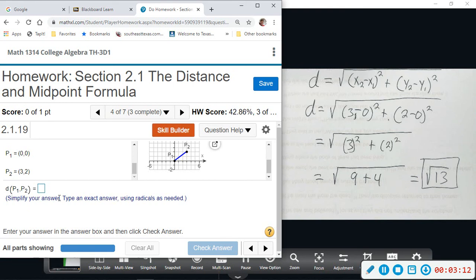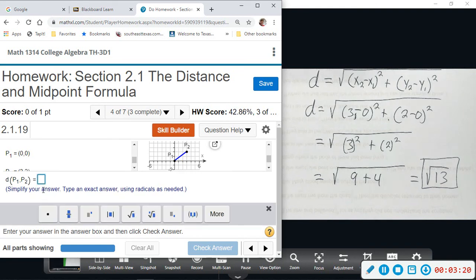It says type exact answer using radicals as needed. So we don't want a decimal. We want it in radical form. So we want square root of 13.